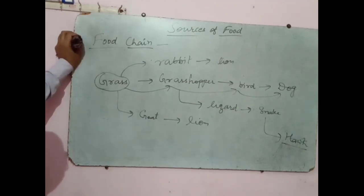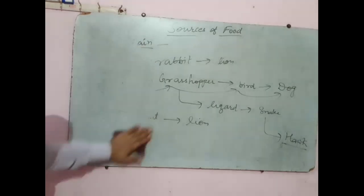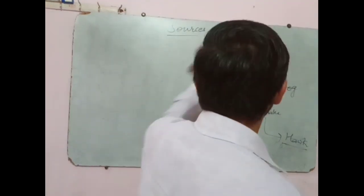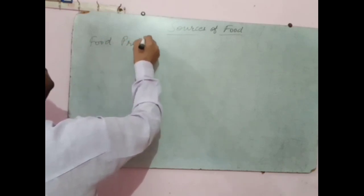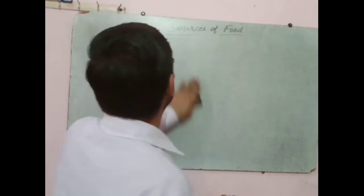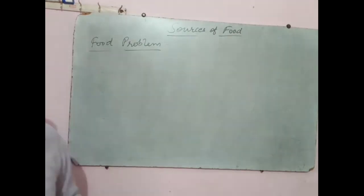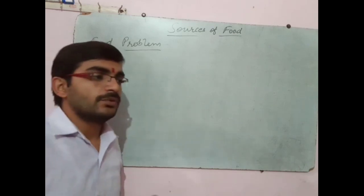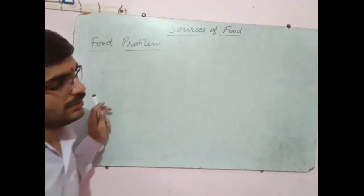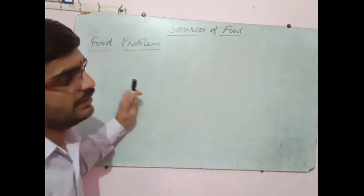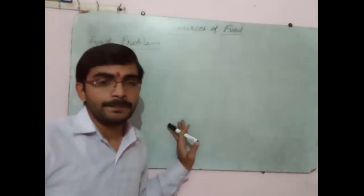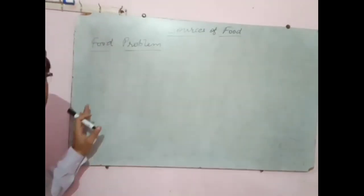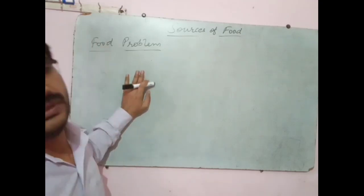One more topic is there: food problem. What is the food problem? Food problem is the scarcity of food. We know that in our country many people do not get food at the proper time. Why? Because higher society — or we can say upper class families — are wasting food without any purpose. That causes the food problem, which causes food scarcity. This should not happen in our country.